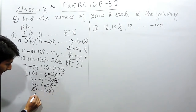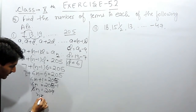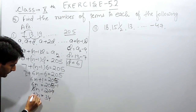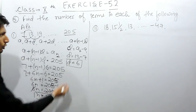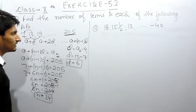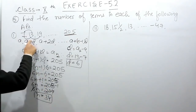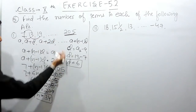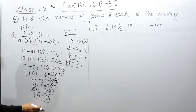I can divide 204 by 6. 6 times 34 is 204. So the Nth term gives us N equals 34. The number of terms in this AP must be 34. So then only these conditions are satisfied, and the answer is 34.